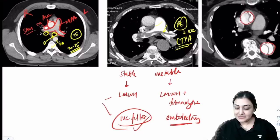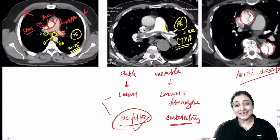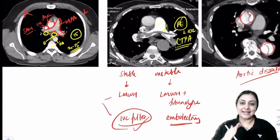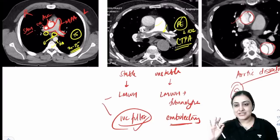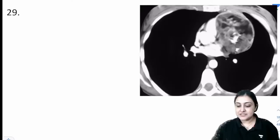Aortic dissection: CT shows a flap in both ascending and descending aorta. Most common risk factor: hypertension. Others: Marfan's, Ehlers-Danlos, tertiary syphilis. Stanford classification: A = ascending involved (surgical emergency); B = only descending (medical management with IV esmolol). History: acute chest pain radiating to back.